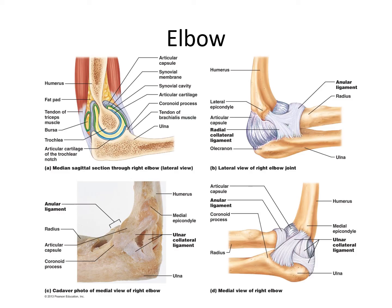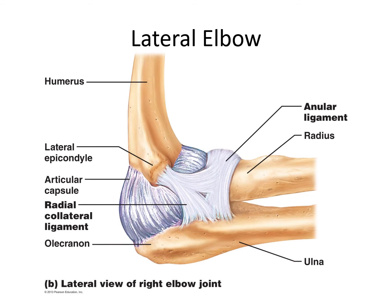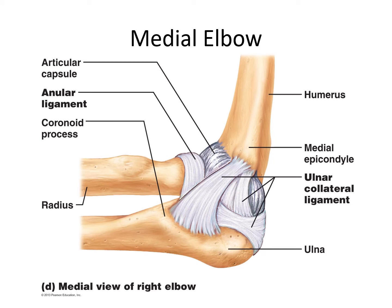Looking at various views of the elbow: the ulna is the forearm bone that actually forms the joint with the humerus — this would be the ulna and then the radius. The annular ligament basically encapsulates the head of the radius. The radial collateral ligament is shown here. Then the ulnar collateral ligament in the medial view — there are actually several different parts to that structure. The annular ligament again encircles the head of the radius in the lateral view of the right elbow joint.